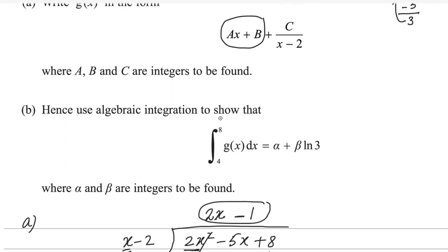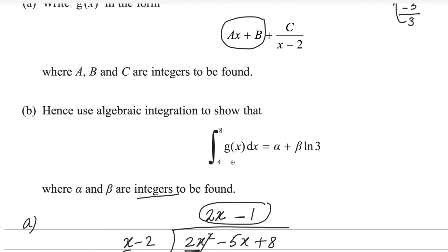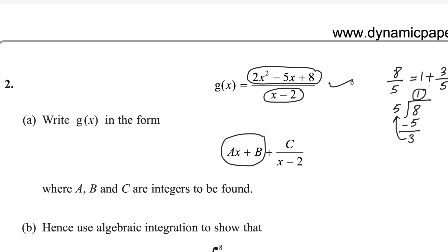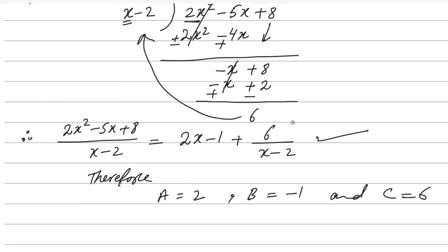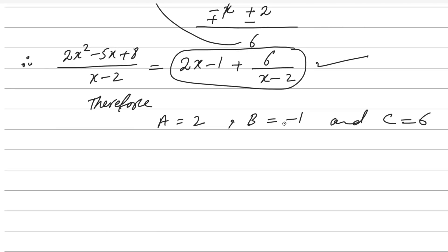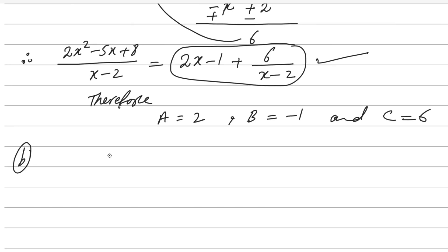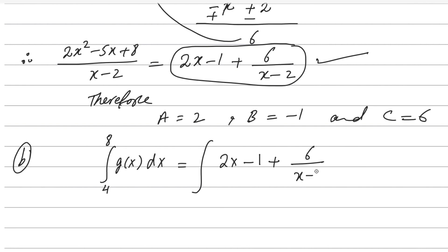Hence, using algebraic integration, show that the integral of g of x with limits from 4 to 8 dx equals alpha plus beta log 3, where alpha and beta are integers to be found. Now instead of integrating the original function, we will integrate the result we just found. For the second part, the integral from 4 to 8 of g of x dx — g of x is replaced by 2x minus 1 plus 6 over x minus 2 — with limits 4 to 8, dx.